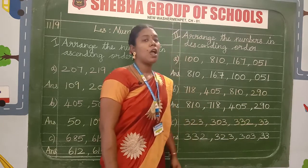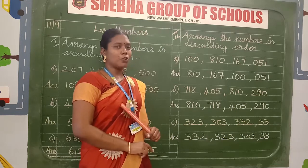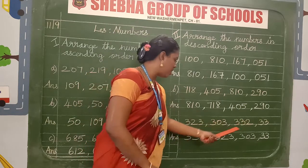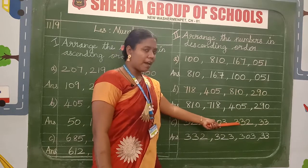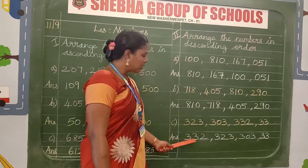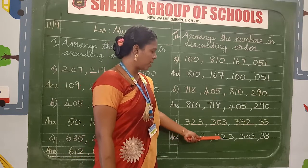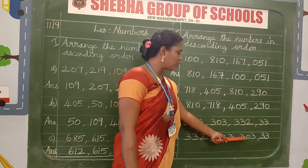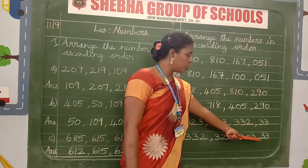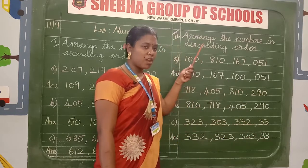This is the C question. How will you write the descending order? Bigger number to smaller number. So find the bigger number — the bigger number is 332. Write the answer: 332, 323, 303, and lastly write the smaller number — 33. After finishing the second Roman numeral, draw the line using a scale and pencil.